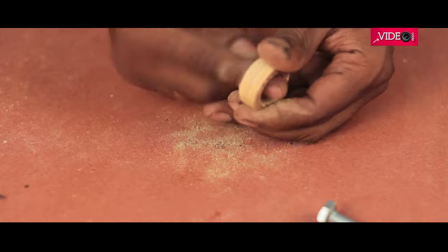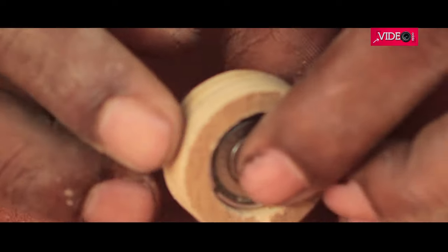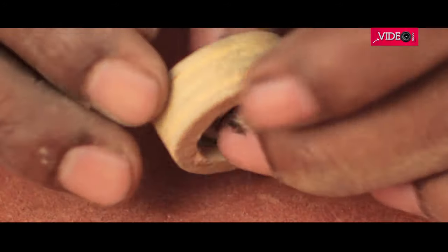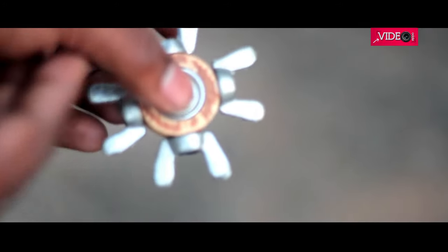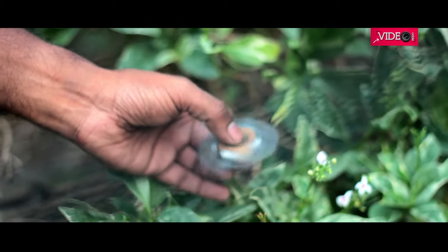After a bit of filing and sanding, the bearing was able to fit in. Once done, I super glued some wing nuts to the outer side of the wooden ring, completing the third fidget of this video.